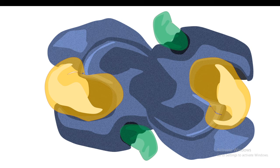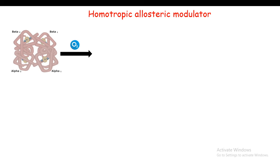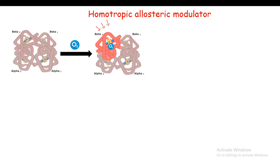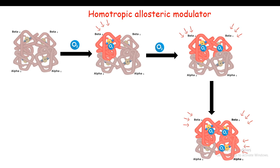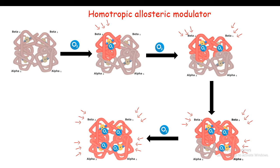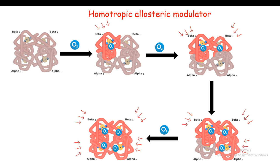We can take the example of hemoglobin and oxygen binding. Hemoglobin is not an enzyme, but the modulation type is allosteric regulation with cooperative binding. Hemoglobin in its inactive state is not bound to O2. When one oxygen molecule binds to one subunit of hemoglobin, it makes other subunits more accessible to oxygen binding, making it easier for those subunits to bind oxygen. In this subsequent fashion, all subunits bind to oxygen, creating oxygenated hemoglobin, which is essential for physiological function.